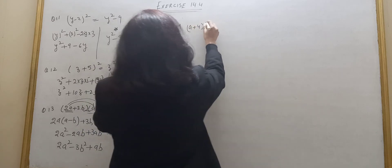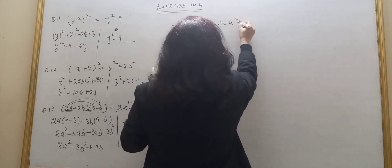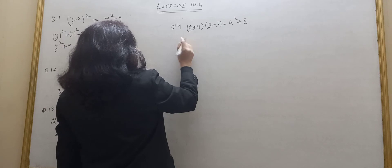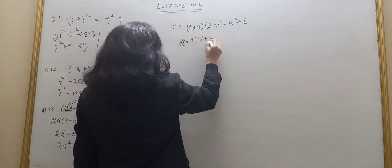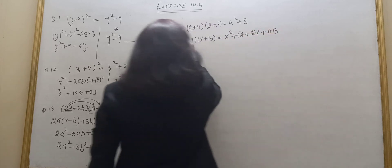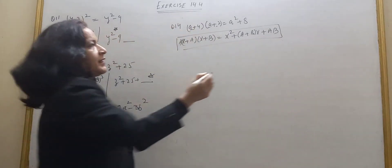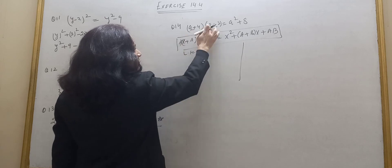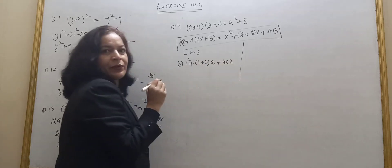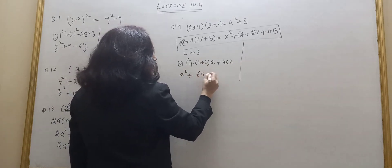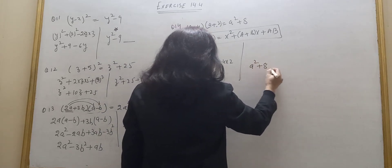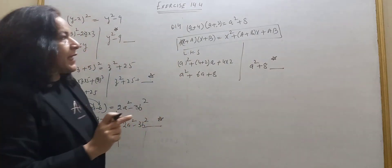Question number 14: a plus 4 into a plus 2 is equal to a² plus 8. Let's check. Using the identity x plus a into x plus b = x² + (a+b)x + ab, the left hand side gives a² plus 4 plus 2 times a plus 8, which is a² plus 6a plus 8. But the right hand side only has a² plus 8 — 6a is missing. The error is that 6a is missing.